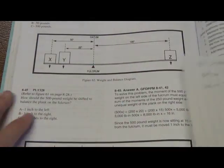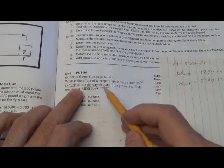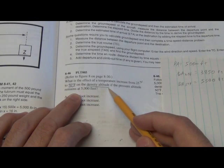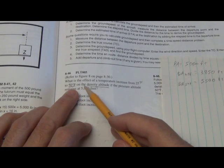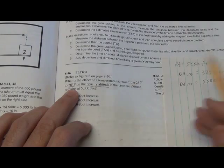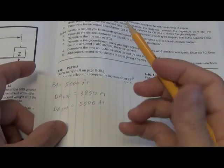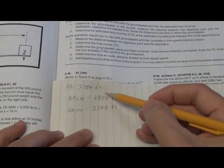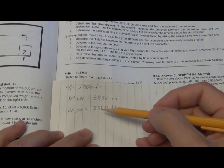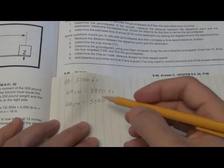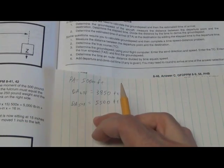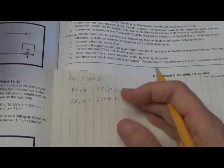Now let's go back to the question. It asks what is the effect of a temperature increase from 25 to 50 degrees on the density altitude. They basically want to know the difference between the two — they forced you to find the density altitudes for each temperature, and now all you have to do is subtract one from the other. I'll use a calculator to allow for less error.